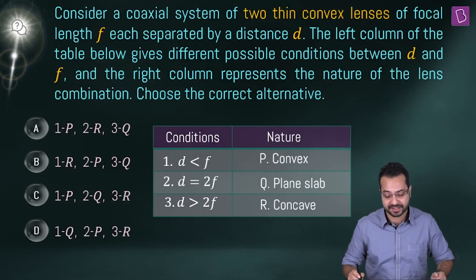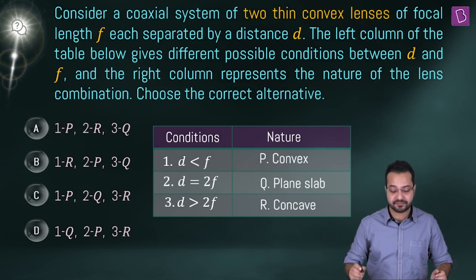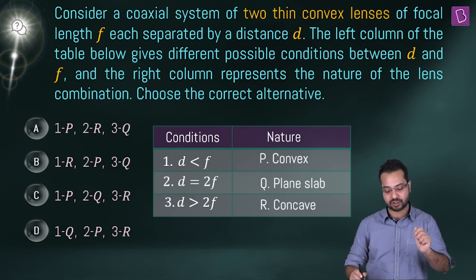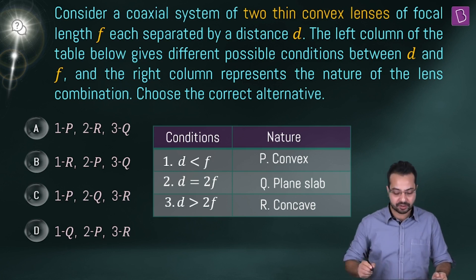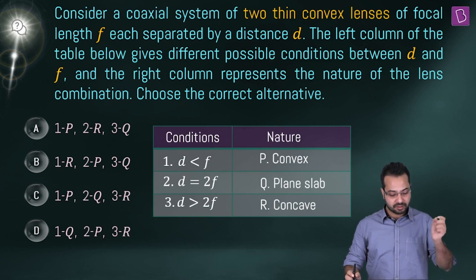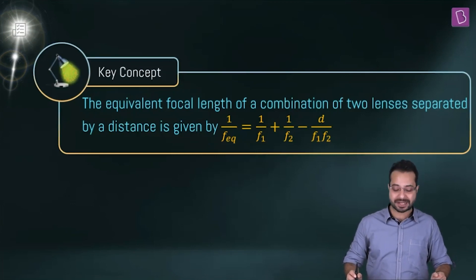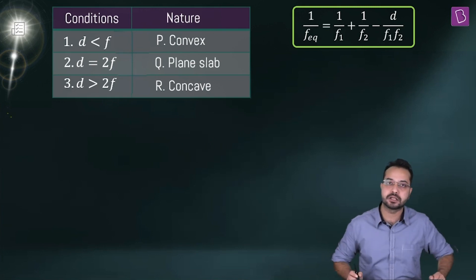Consider a coaxial system of two thin convex lenses of focal length f each, separated by a distance d. The table gives different conditions between d and f on the left, and the nature of the lens combination on the right. The key concept is that the equivalent focal length of a combination of two thin lenses separated by a distance is given by 1/f_eq = 1/f1 + 1/f2 - d/(f1·f2).